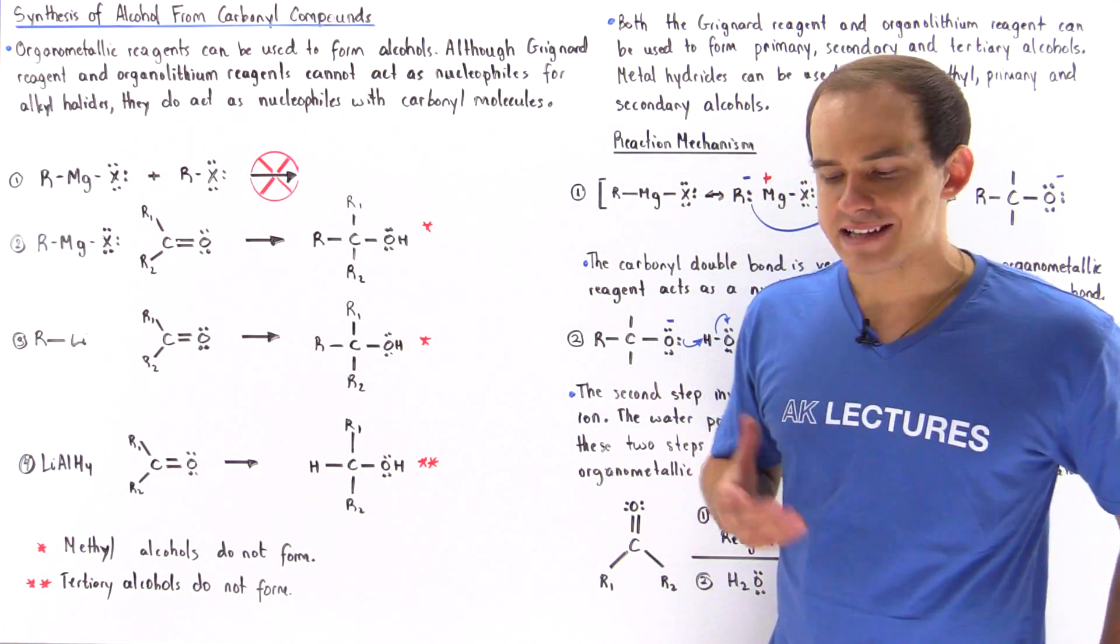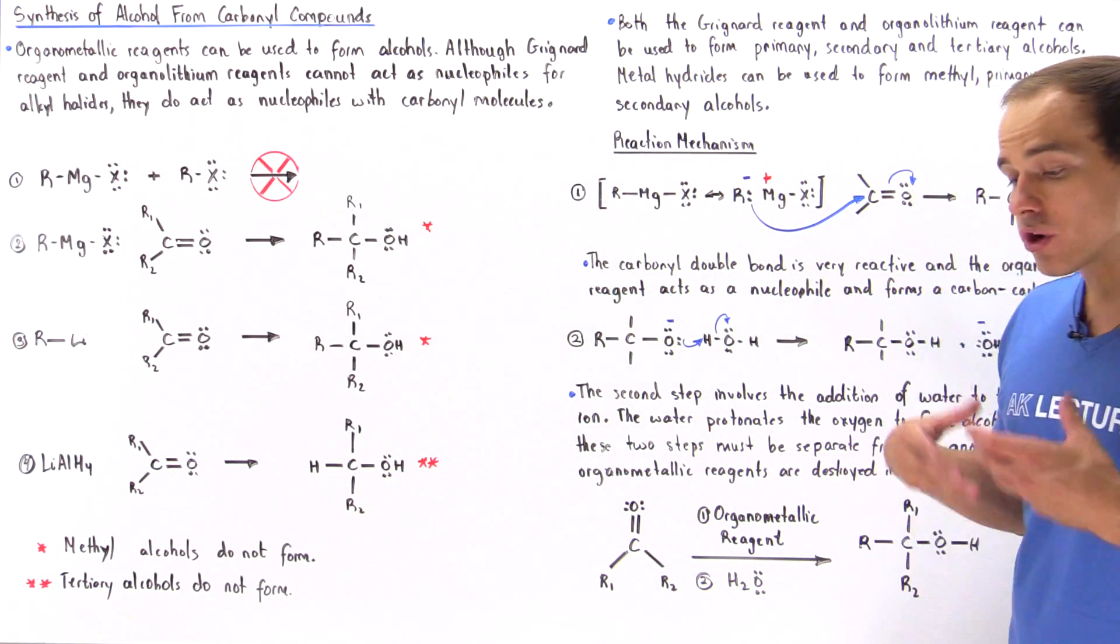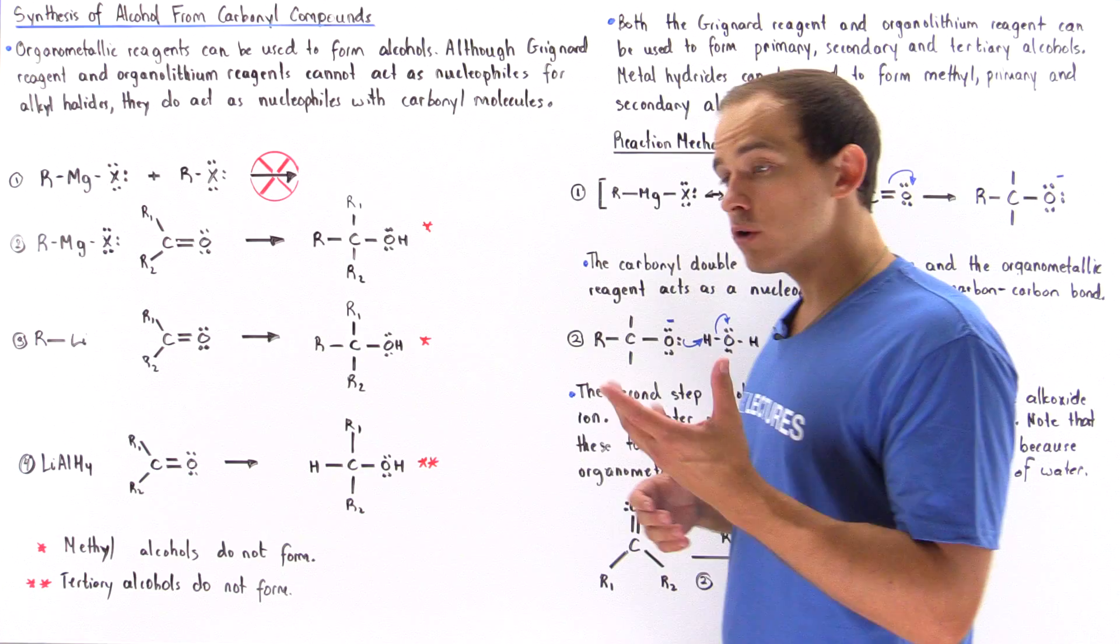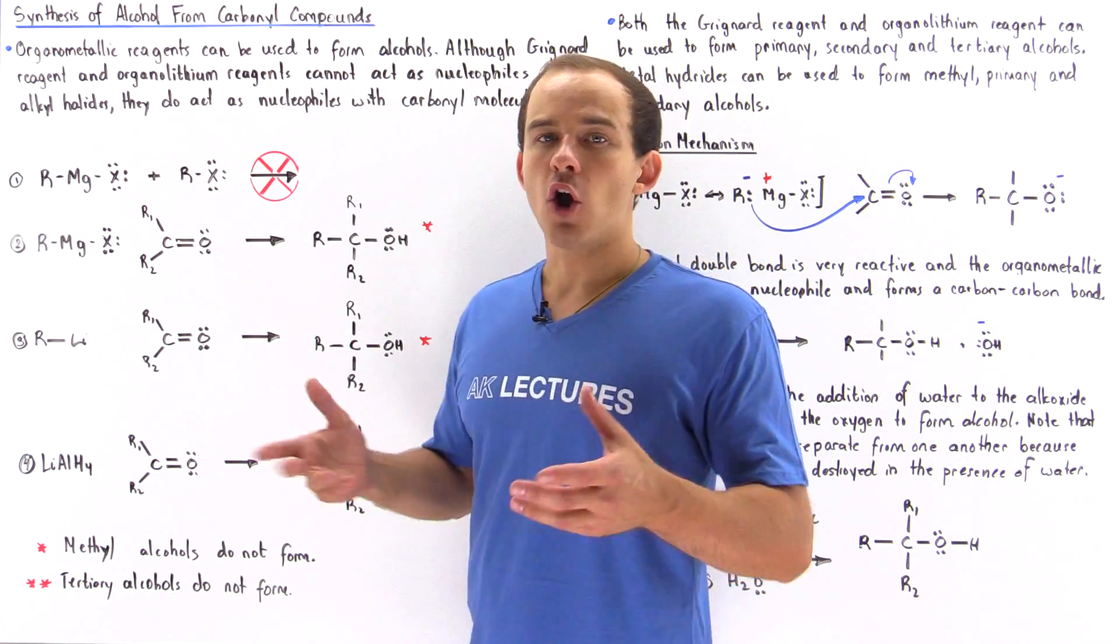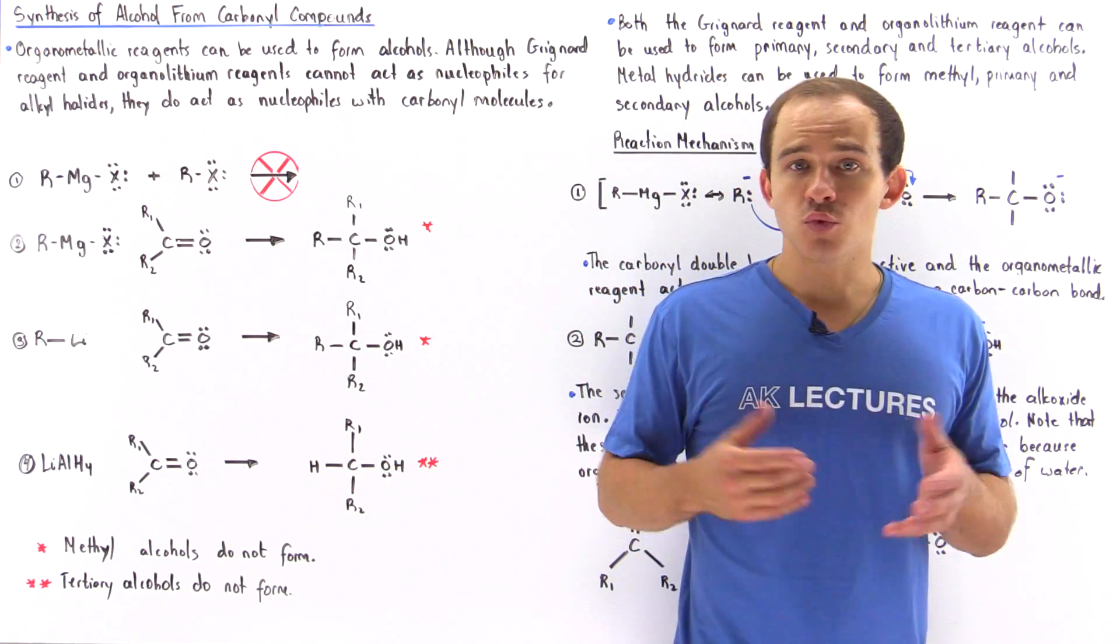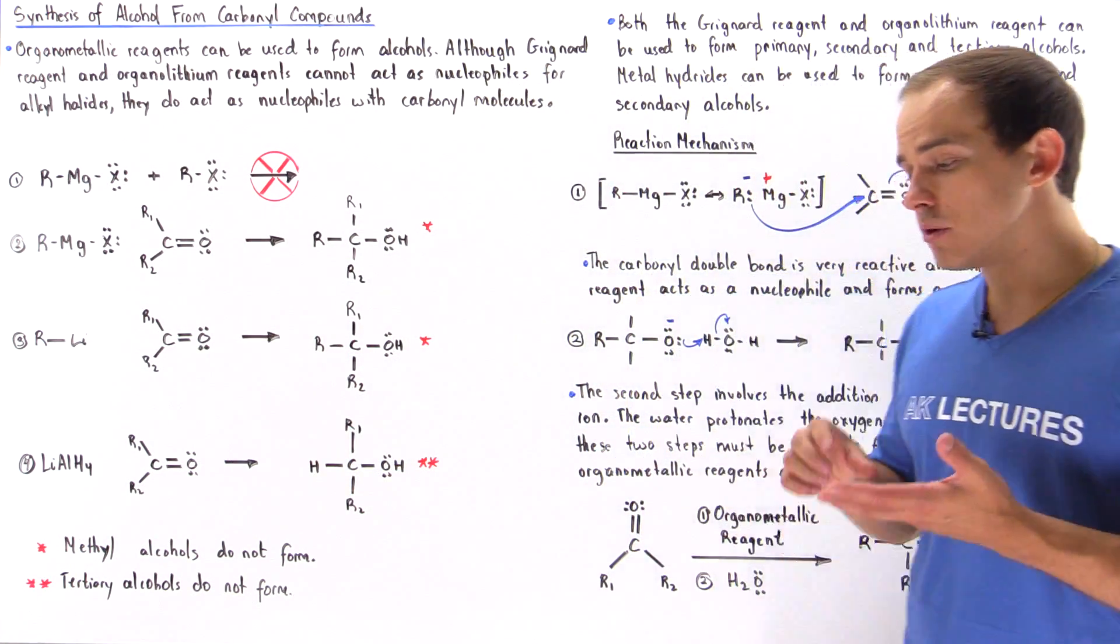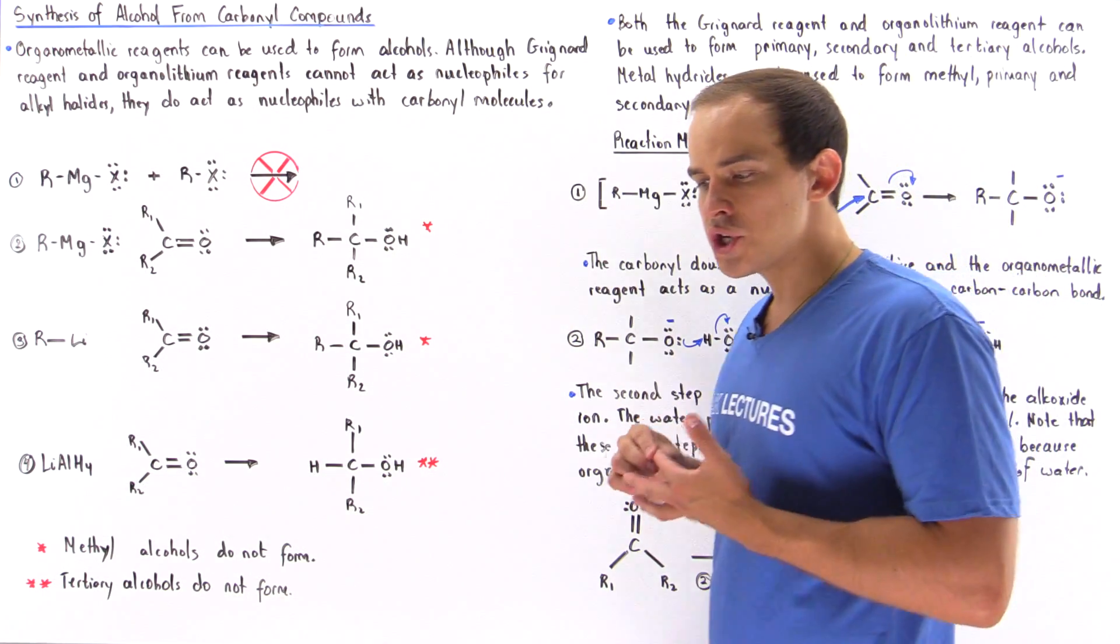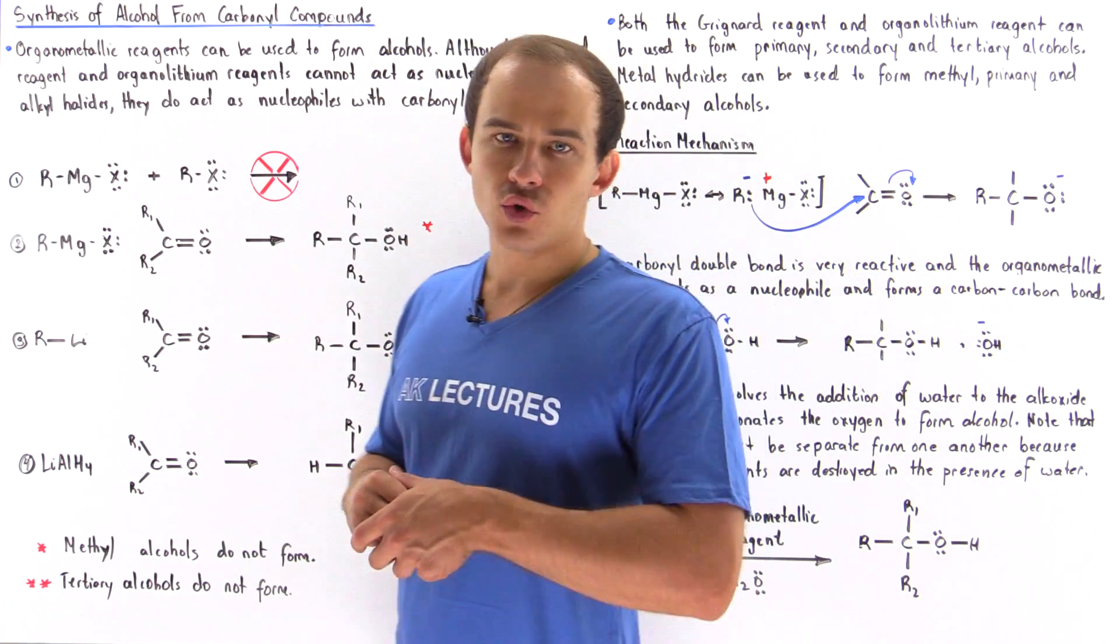One way to synthesize alcohols is by mixing organometallic reagents or metal hydrides with carbonyl compounds. This way we can produce methyl, primary, secondary, and tertiary alcohol molecules.